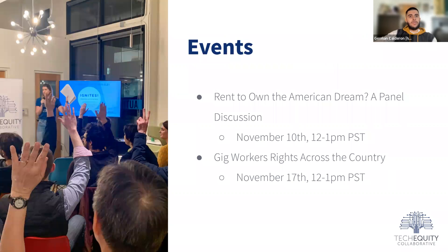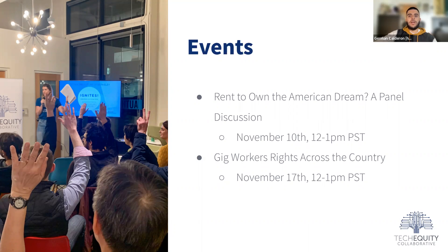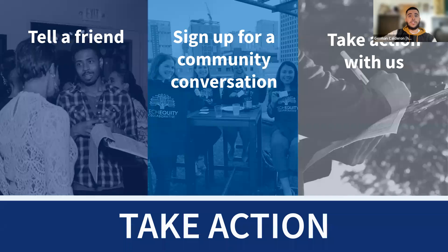The two events we have coming up: the first is Rent to Own: The American Dream, a panel discussion next Thursday from 12 to 1 p.m., where we'll be talking about rent to own as an alternative path to home ownership — how it works, who stands to benefit, and what it means for the future of home ownership in the United States. Next, we have Gig Workers Across the Country in two weeks, also on a Thursday from 12 to 1 p.m., where we'll learn from workers, advocates, and researchers about the future of gig work and what lessons the tech industry can take from the long battle for workers' rights. I'll send a link to both events on our events page afterwards. You can do three things right after this call: tell a friend, sign up for a community conversation, or sign up to volunteer on one of our projects.